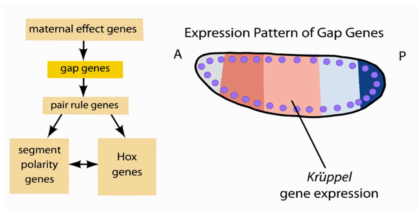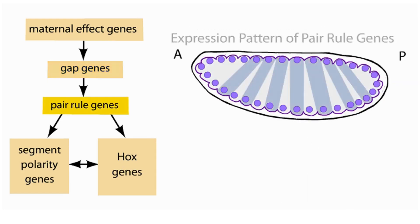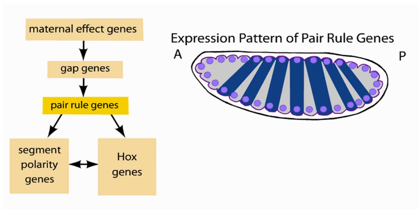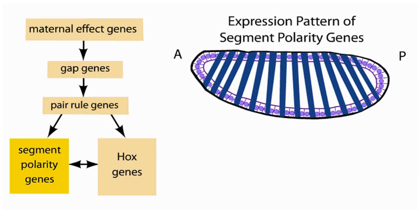The gap genes encode transcription factors that regulate the expression of another class of genes called the pair-rule genes. The pair-rule genes are expressed in stripes along the embryo, dividing the embryo into units of two body segments each. Many of these genes encode transcription factors which control the expression of another class of genes called the segment-polarity genes. Note that cell membranes begin to form around the nuclei during this time of development.